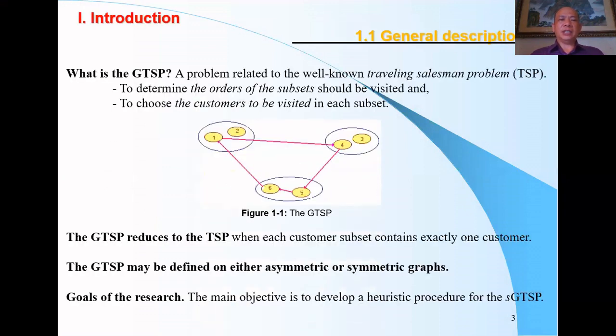What is GTSP? GTSP is a problem related to the well-known traveling salesman problem in which we determine the order of the subjects to be visited and choose the customer to be visited in each subject.